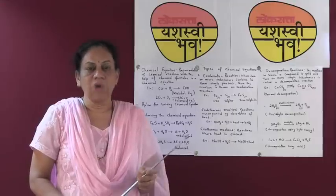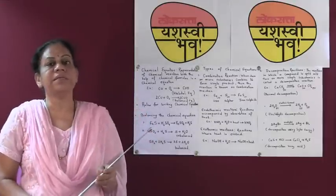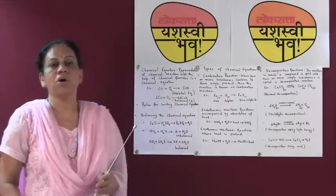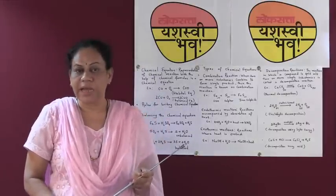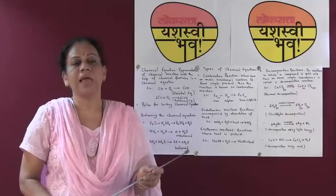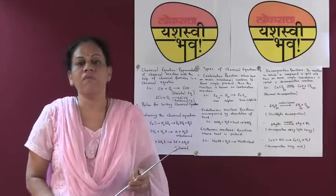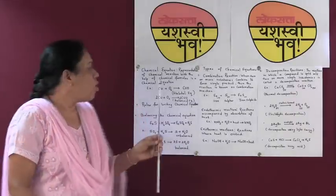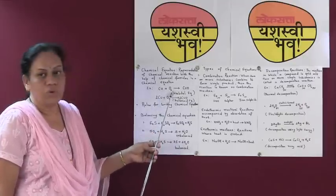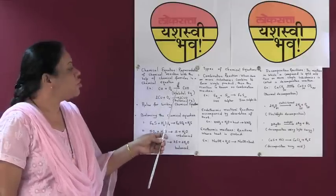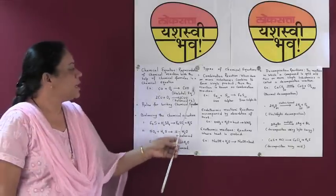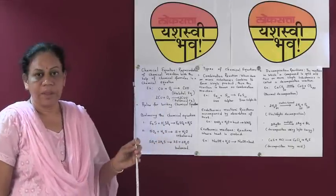Reactions may be expressed in words merely by saying copper reacts with oxygen to give copper oxide — this is called a word reaction. But the same reaction written with the help of formulas, like Cu reacts with O2 to give CuO, is called a chemical equation.